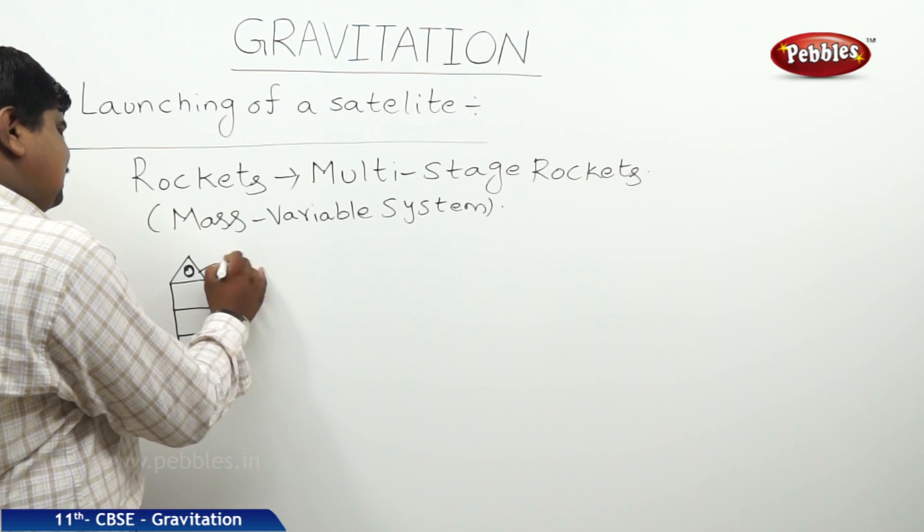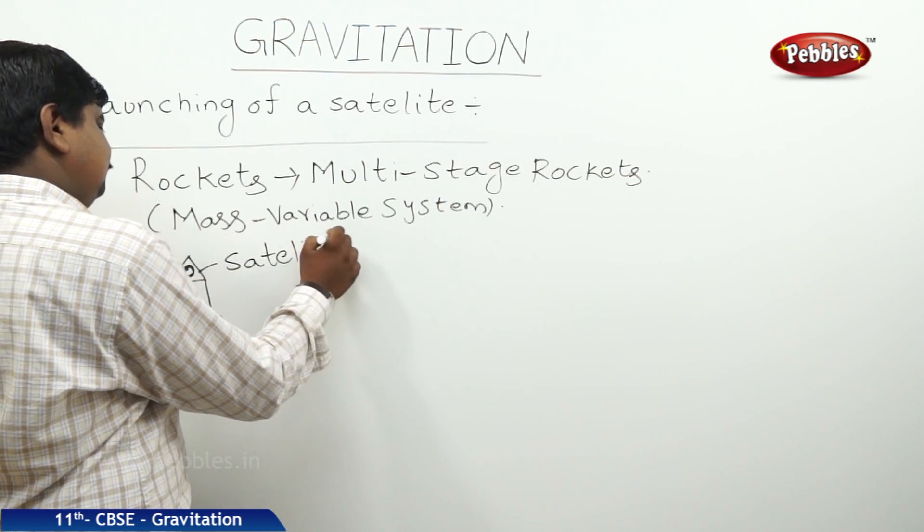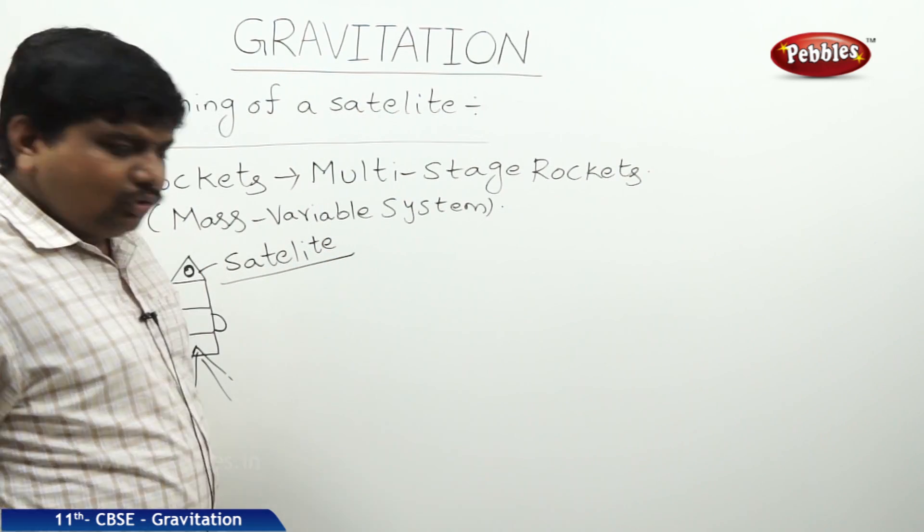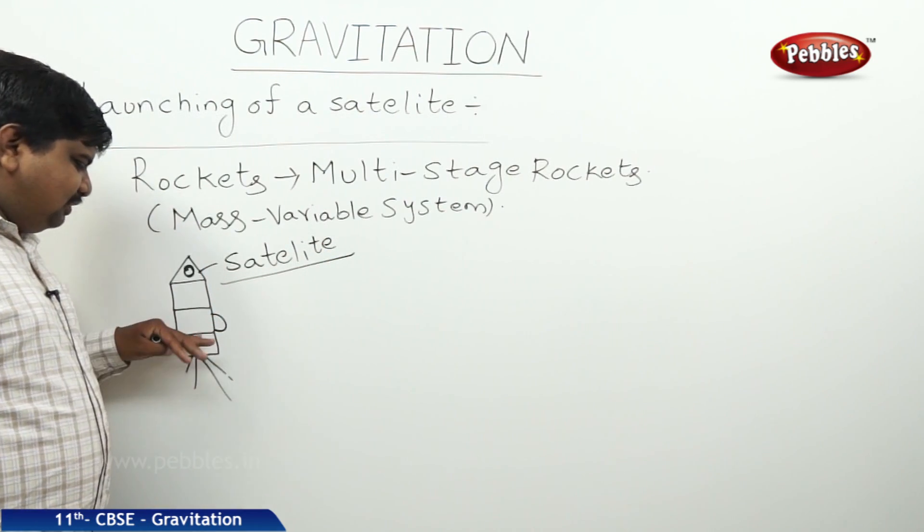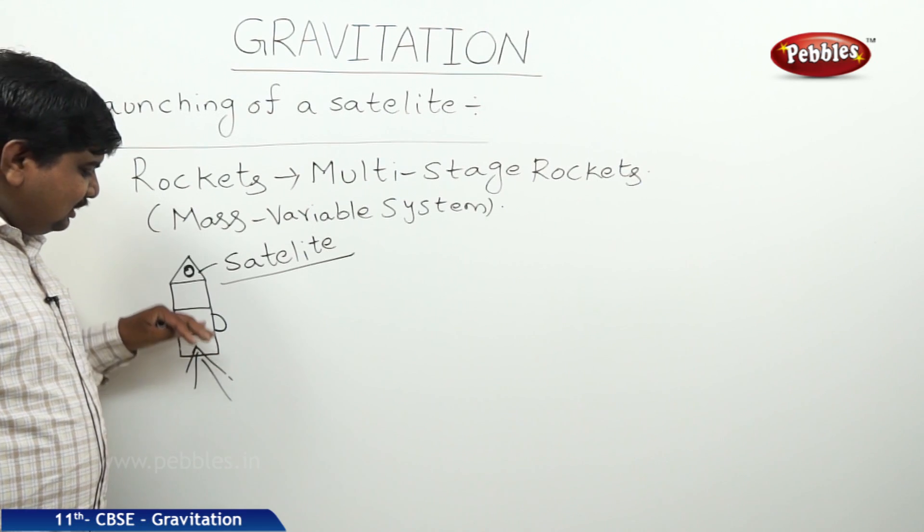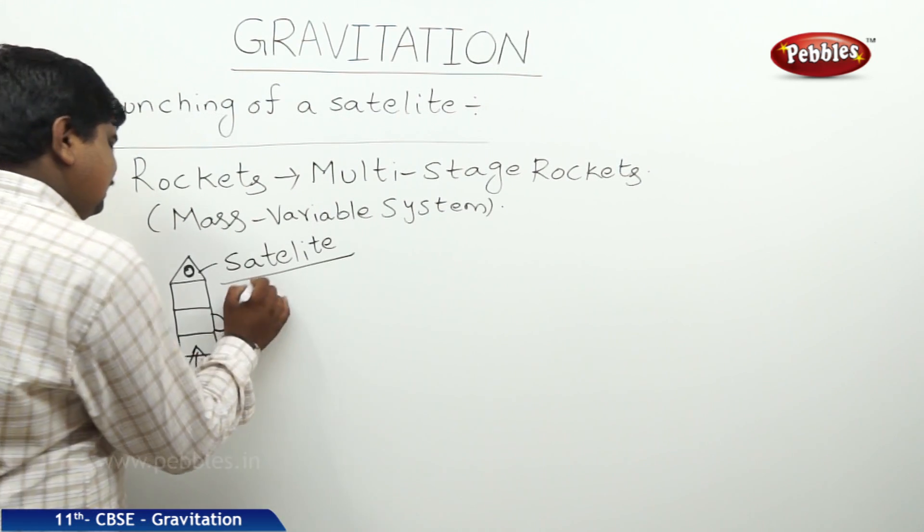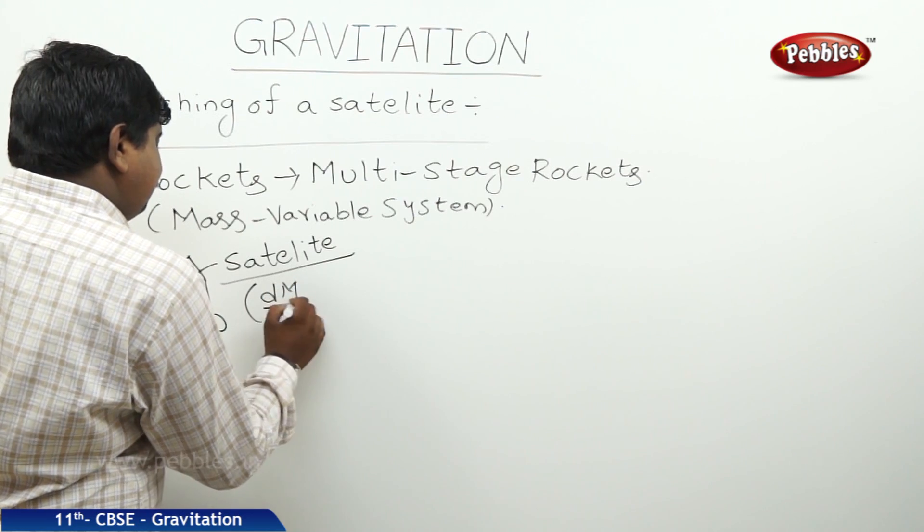So, this branch contains the satellite. What we can expect from this? The mass of this rocket system or multi-rocket system is decreasing continuously. Therefore, we can write this one as dm by dt.